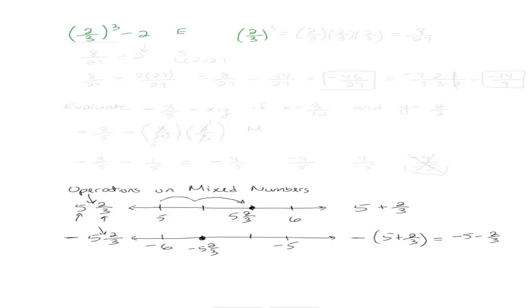So if I do exponents first, that's 2 thirds cubed. So let's do that here on the side. If I expand that, that's 2 thirds times 2 thirds times 2 thirds. What does that give me?